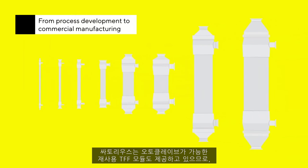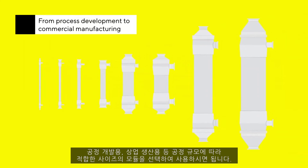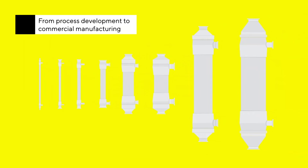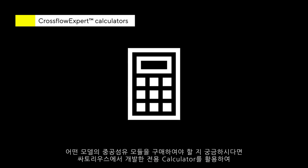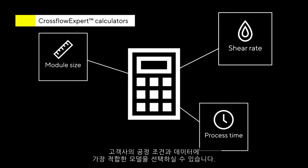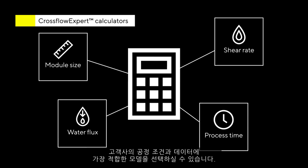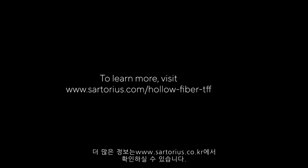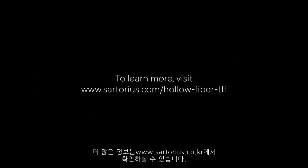In addition to the single-use product, Sartorius can also provide reusable and autoclavable TFF modules in sizes ranging from process development to commercial manufacturing. If you need assistance choosing a hollow fiber module, Sartorius offers proprietary calculators that make it simple to determine the best filtration solution for your unique operating conditions and data. Visit Sartorius.com to learn more.